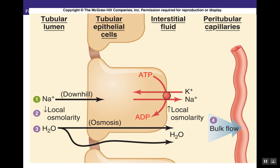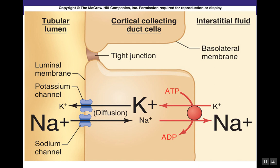With sodium and chloride reabsorption, and if vasopressin is on board allowing water to follow through the transcellular pathway, water will also be reabsorbed. The bulk flow goes from inside the nephron to the circulatory system via the peritubular capillaries. At the same time, potassium is being secreted and then excreted.